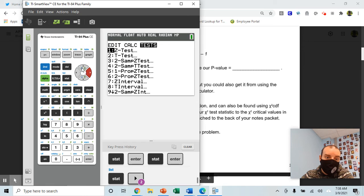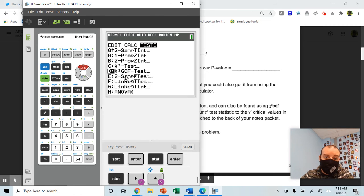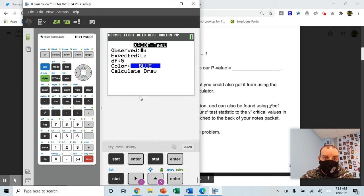Then you'll go to stat, over to tests, and you'll go to letter D, which is a chi-squared goodness of fit test. When you go there, you won't have to change your observed in L1. You won't have to change your expected in L2. You'll have to determine what your degrees of freedom are. Then go ahead and hit calculate. You'll get your test statistic, which is your chi-squared value, as well as your p-value.